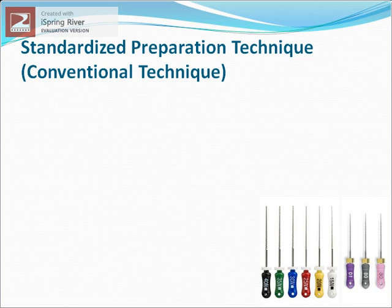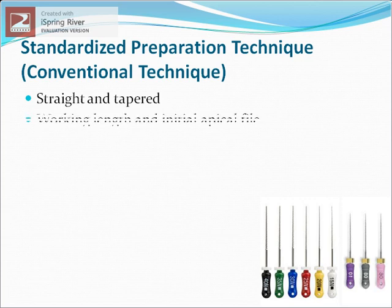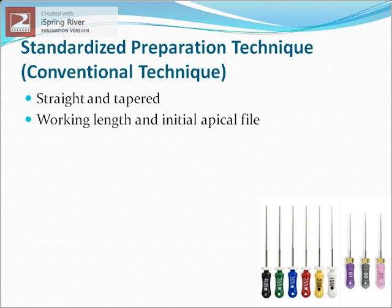The standardized or conventional technique is adequate for preparing canals that are relatively straight and tapered. Before starting, the working length of the tooth should be determined, and the initial apical file must be selected. The initial apical file is the smallest endodontic file that shows resistance upon insertion to the full working length. The operator starts inserting instruments from the smallest file in sequential order until reaching the file that shows resistance — that file is the initial apical file.